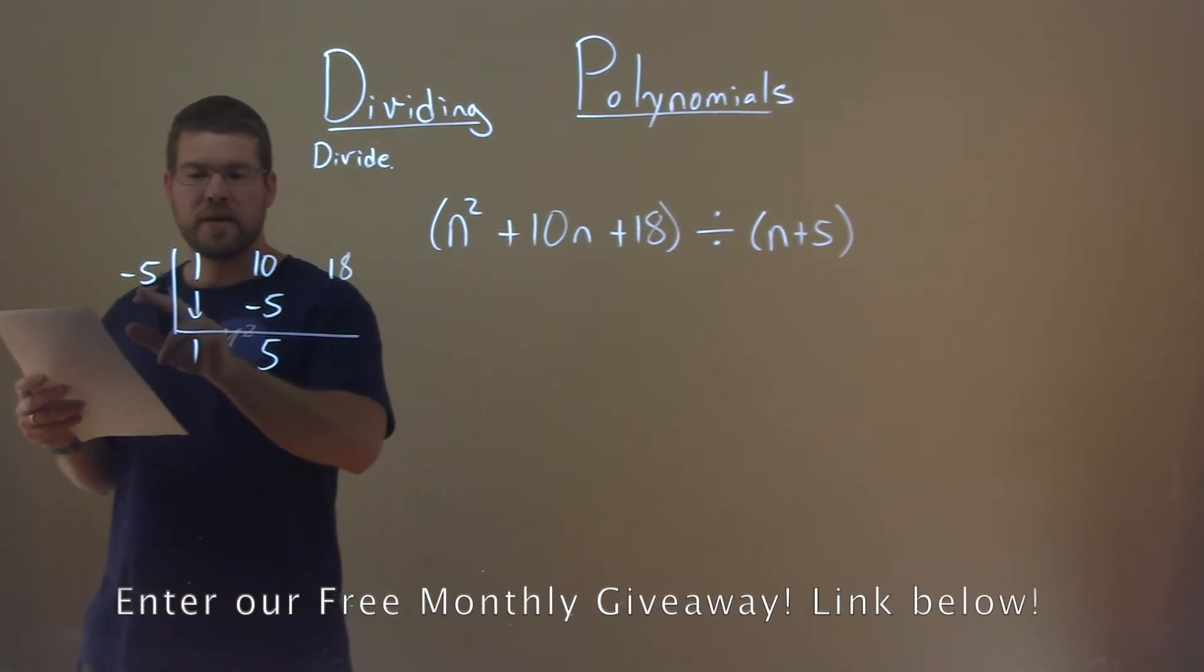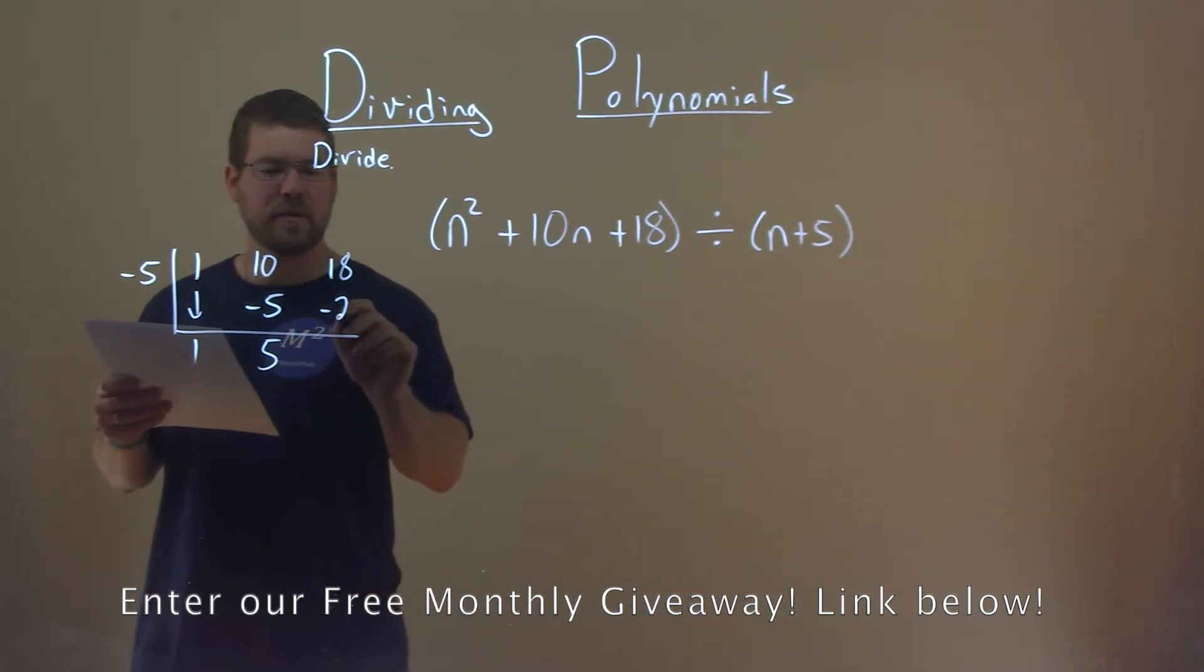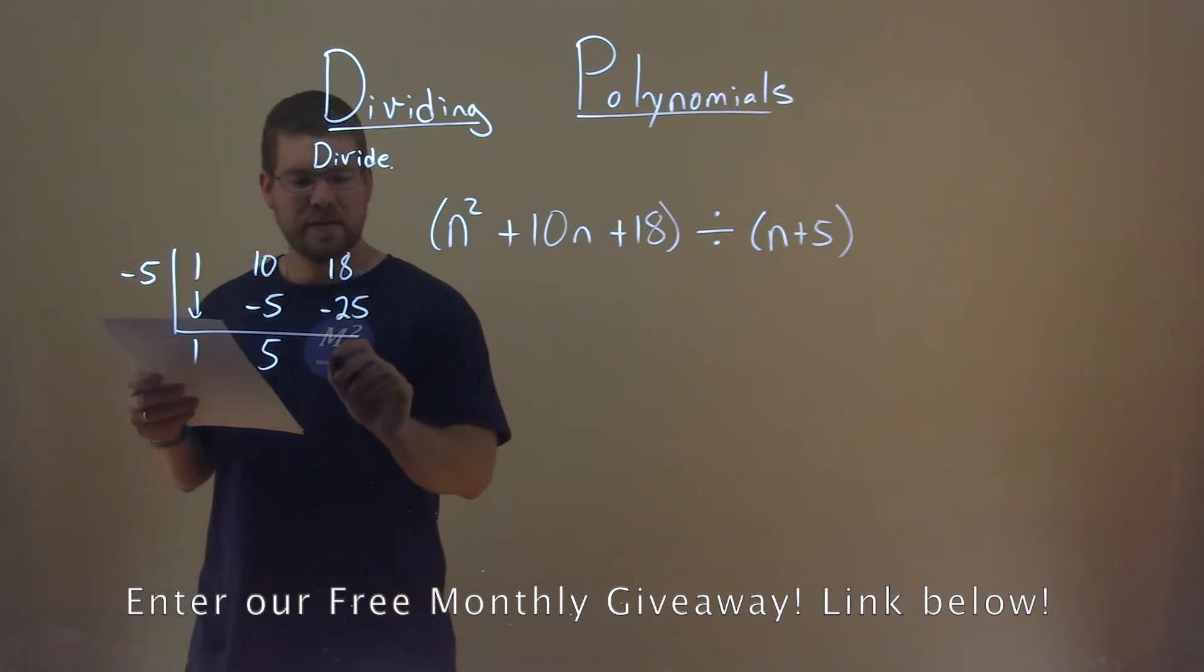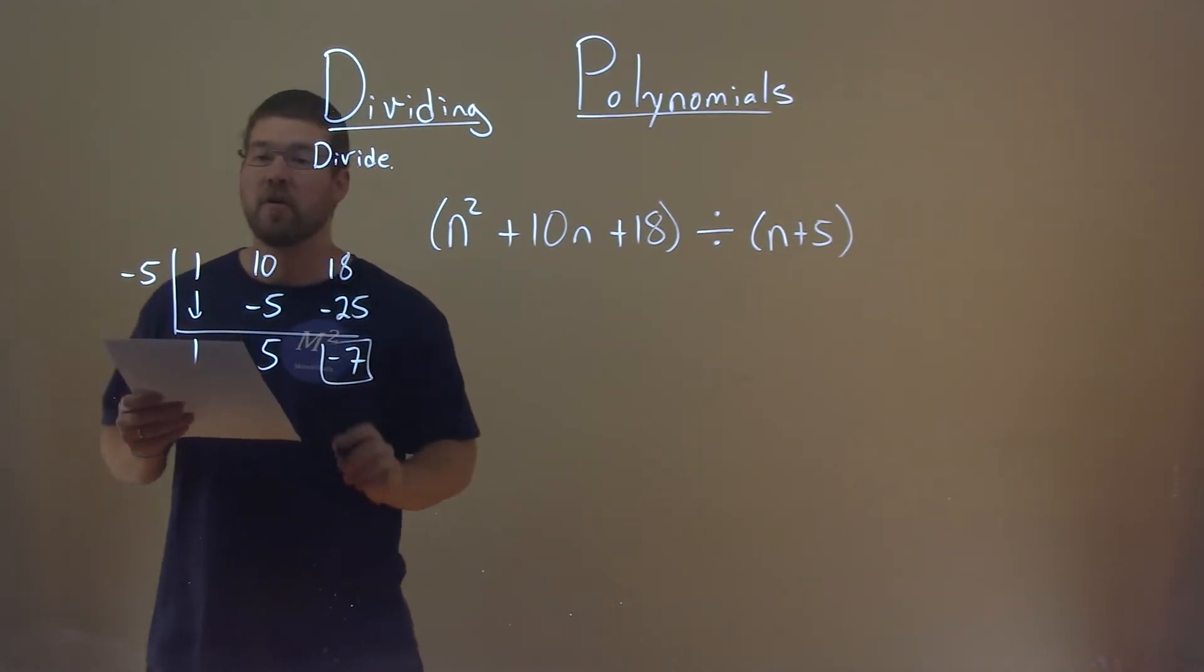Now we multiply negative 5 times 5 again, and we get a negative 25. And 18 plus a negative 25 is a negative 7, and that's our remainder.